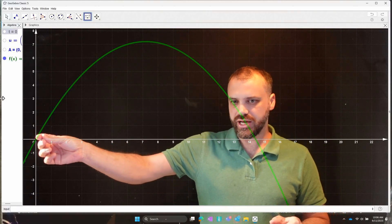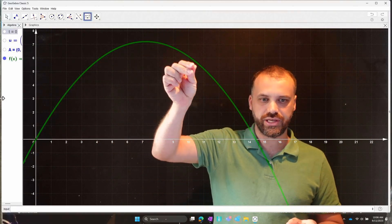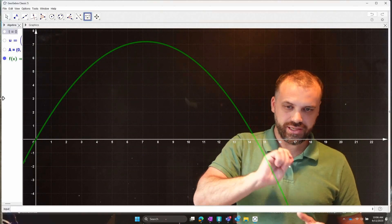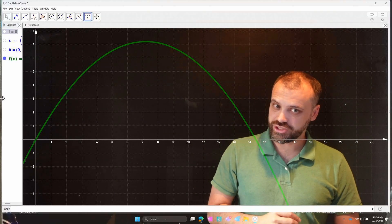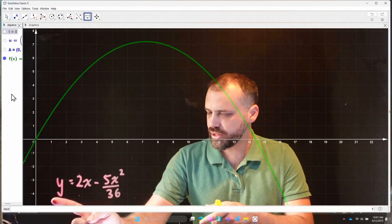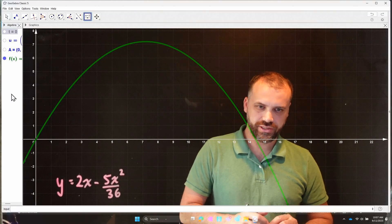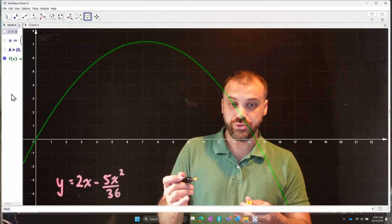So the ball started here and flew through the air and landed right about here. Now, this function has a distinct limitation. And I can show you that limitation by looking at this equation here. This equation tells us two things.